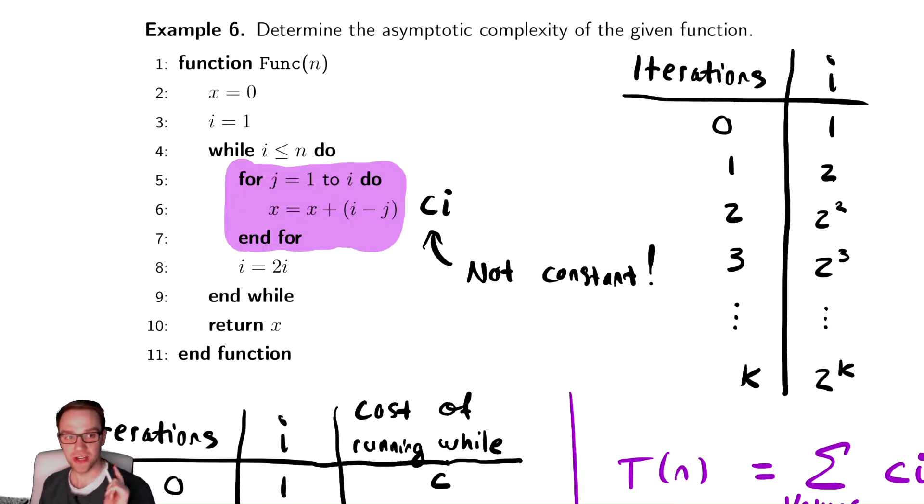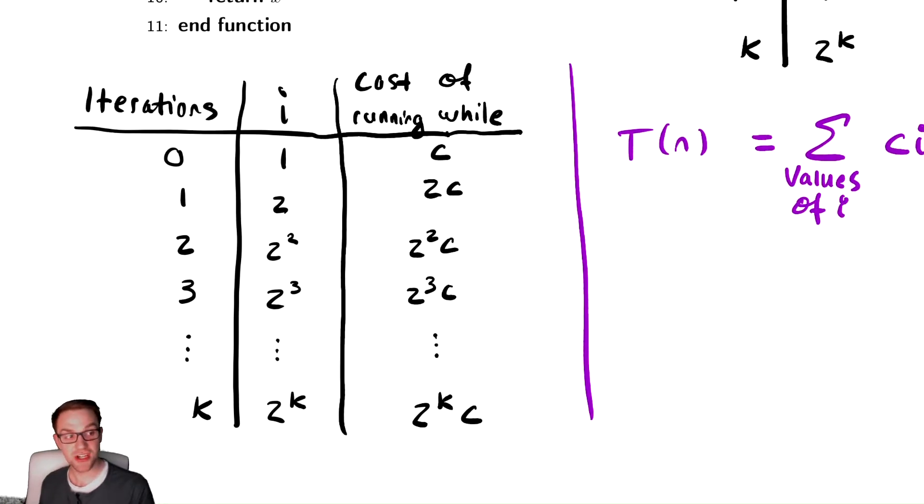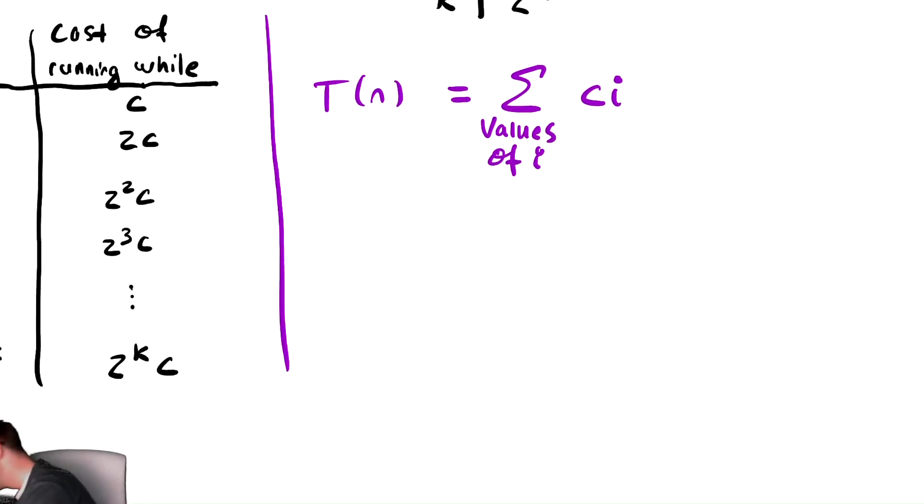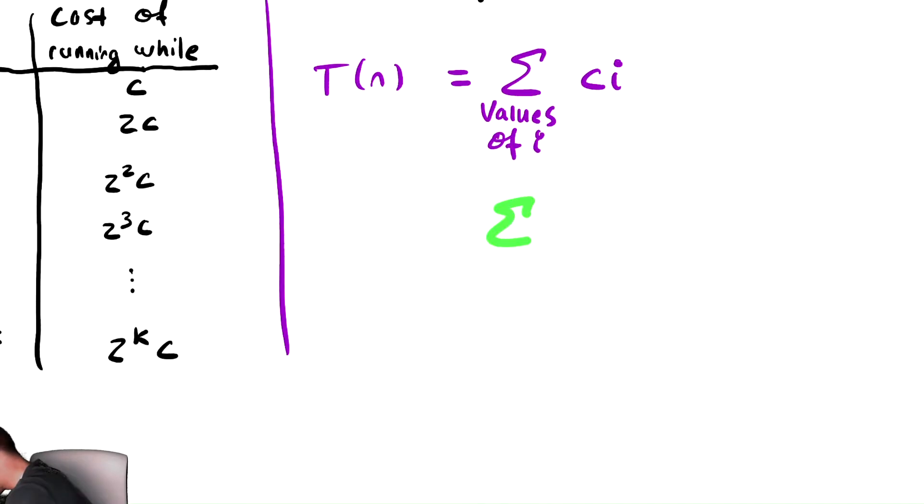However, i does not conveniently go from 1 to n. This table demonstrates that. The summation notation, the sum from i equals 1 to n, presupposes that i goes up by 1. i does not go up by adding 1. Therefore, we cannot write this as a summation over i with our traditional notation. We need to use this sort of janky notation I've written down there, where we are adding up over the values of i in this sort of abstract sense.